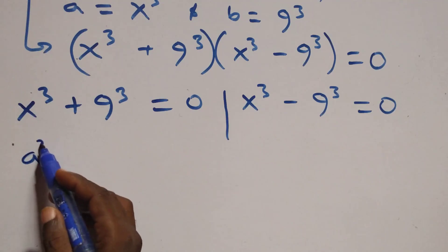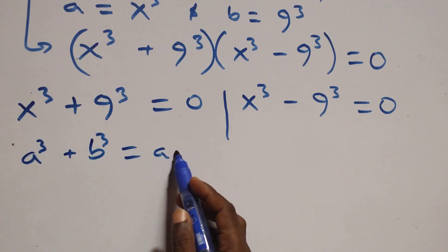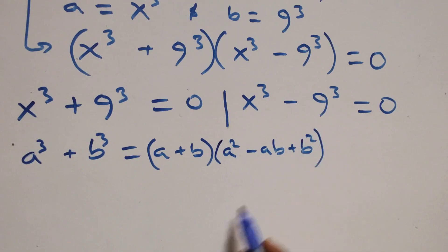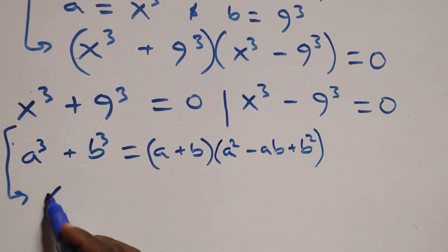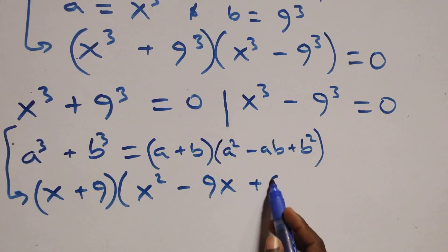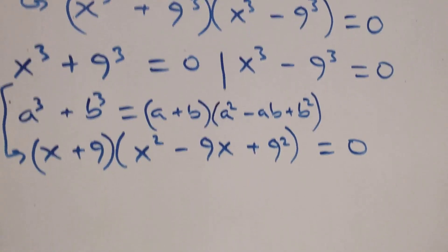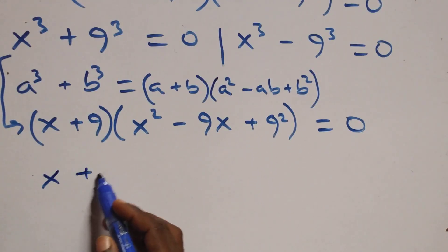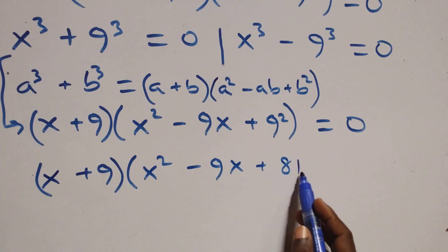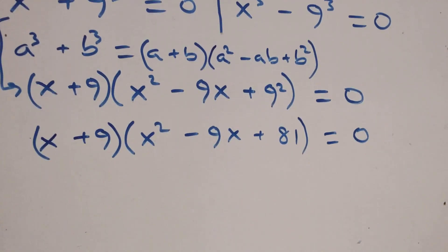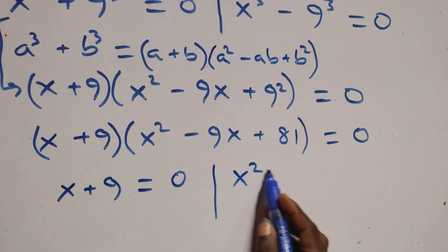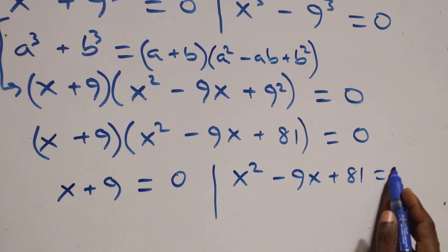Solving the first case: we apply the identity a³ + b³ = (a + b)(a² − ab + b²). So this becomes (x + 9)(x² − 9x + 9²) = 0, that is (x + 9)(x² − 9x + 81) = 0. This gives two sub-cases: x + 9 = 0, or x² − 9x + 81 = 0.